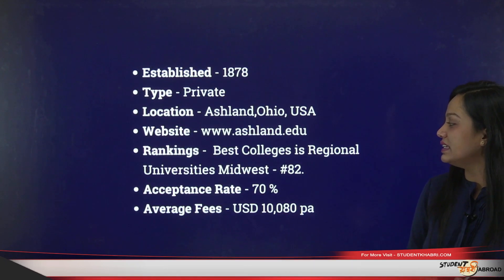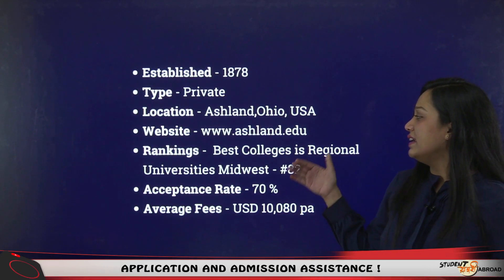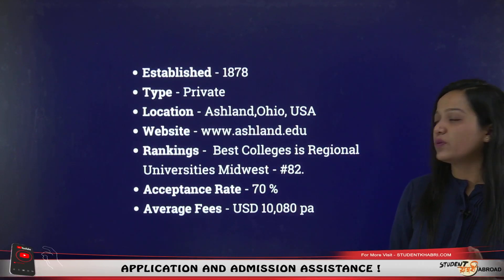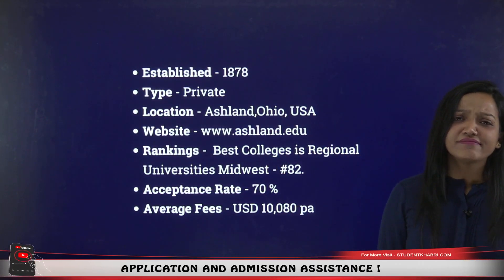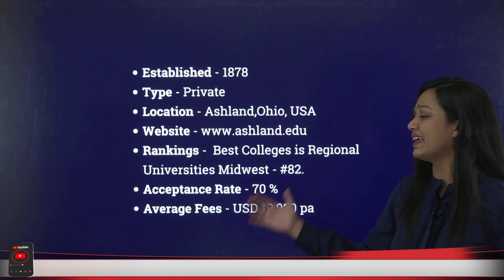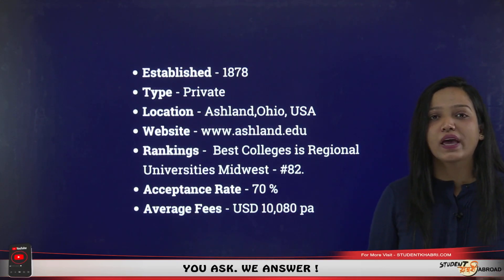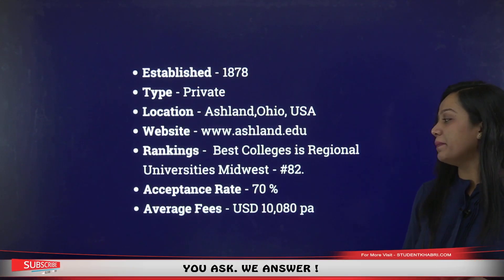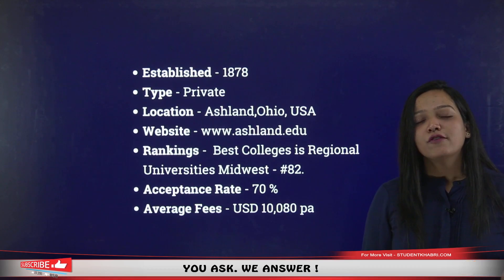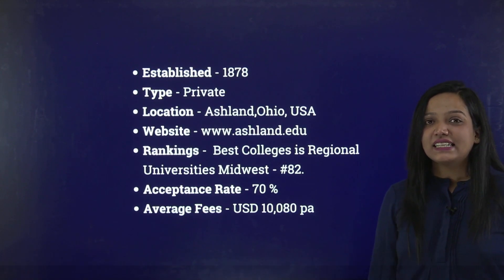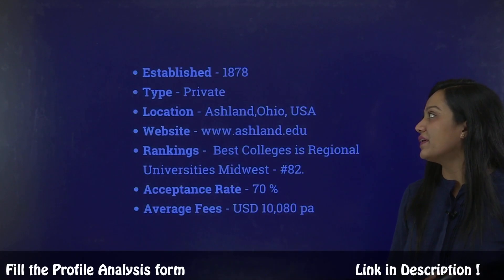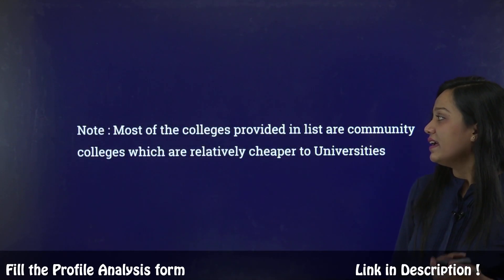Then we have Ashland University, established in 1878. It ranks 82nd among regional universities in the Midwest. The acceptance rate is 70% and average fees are $10,080 US dollars per annum.